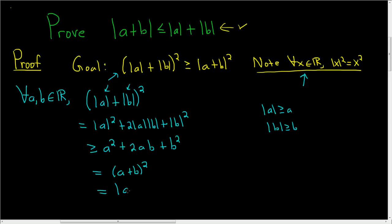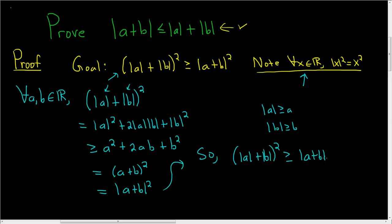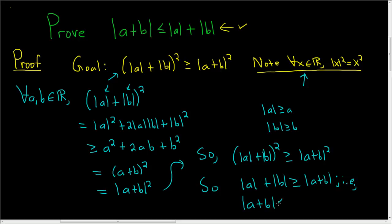But this is the same as the absolute value of A plus B, squared. So we've shown that the absolute value of A plus the absolute value of B, the whole thing squared, is greater than or equal to the absolute value of A plus B, squared. Now if we take the square root of both sides, we get the absolute value of A plus the absolute value of B is greater than or equal to the absolute value of A plus B. And that completes the proof of the triangle inequality.